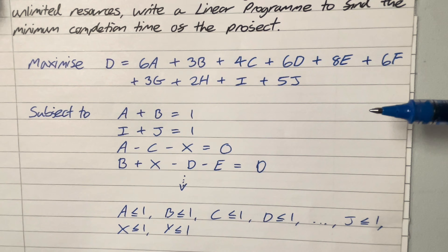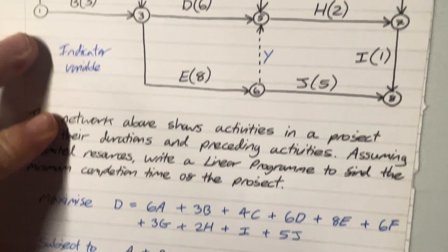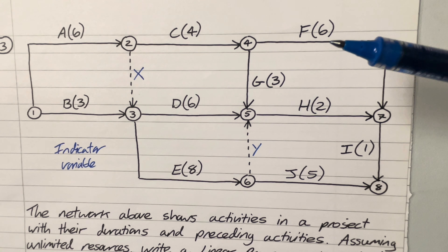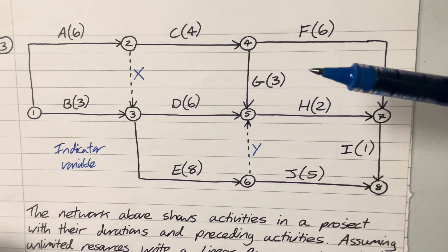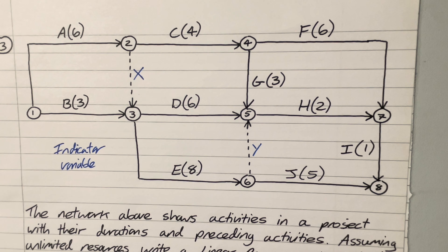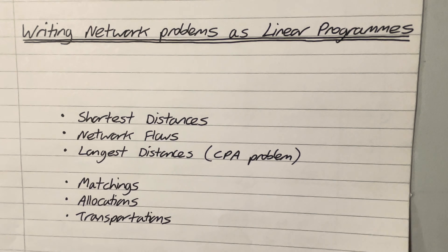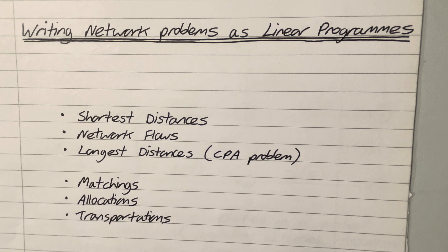The linear program finds the minimum completion time and which activities are critical to achieve it, but it doesn't necessarily find all critical activities if the critical path is non-unique. In my next video we'll look at three brand new problems — matchings, allocations, and transportations — which use bipartite graphs. Any questions, please pop them in the comments below. Hopefully this video was useful for your exam preparation.